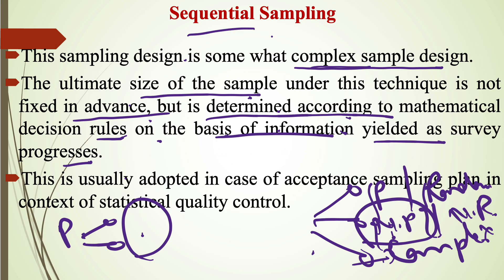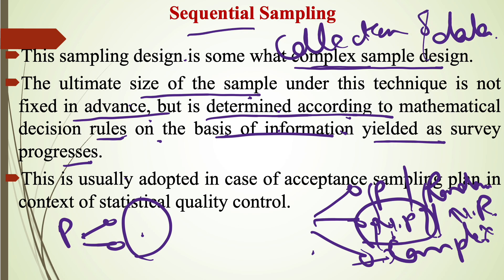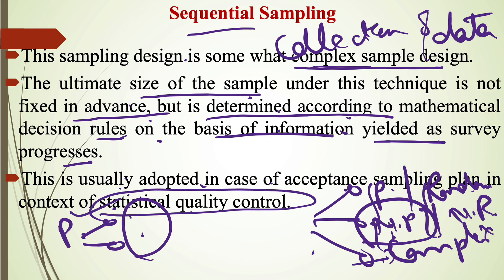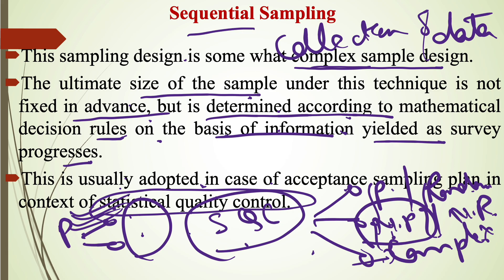This is an important point: the size of sample is based on collection of data. Sequential sampling is usually adopted in the case of acceptance sampling plans in the context of statistical quality control. It is basically used in SQC — statistical quality control — and is an important type of sampling also used in manufacturing units for quality control of products and services.